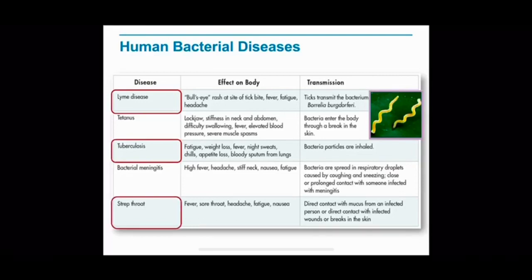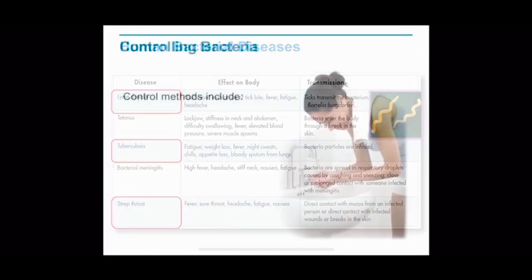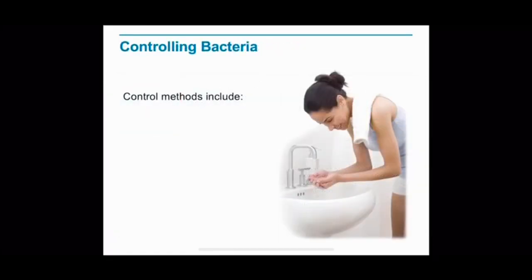We also have strep throat, which includes fever, sore throat, headache, fatigue, and nausea. It is transmitted through direct contact with the mucus from an infected person, or direct contact from infected wounds or breaks in the skin. Most bacteria are harmless, but still, the probability of catching a bacterial infection is high enough to warrant efforts to control bacterial growth.